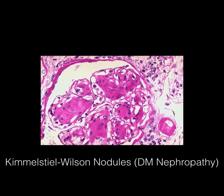These are Kimmelstiel-Wilson nodules — you see these in diabetic nephropathy. They're kind of pink globs that sit in the kidney. Anytime you see this, think about nephropathy and diabetes.